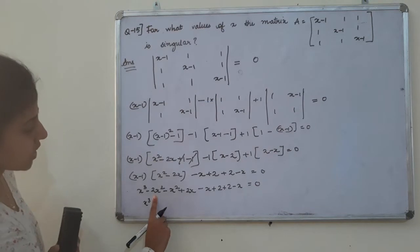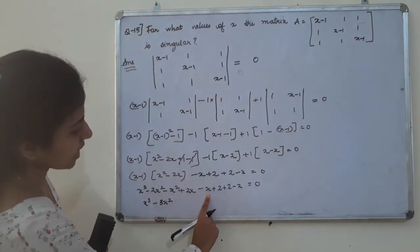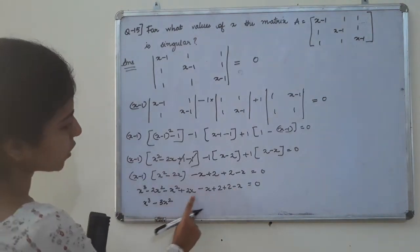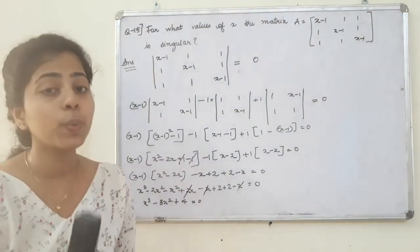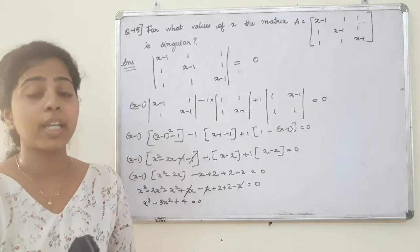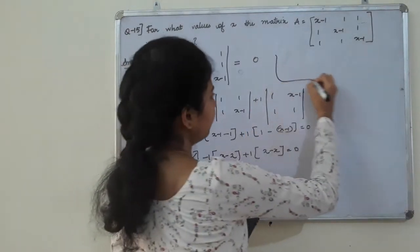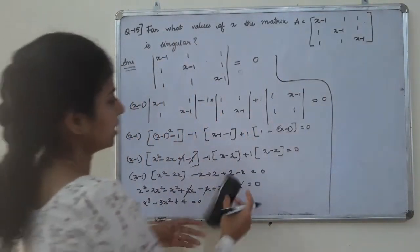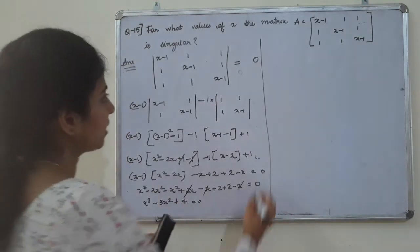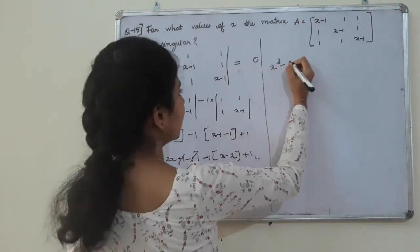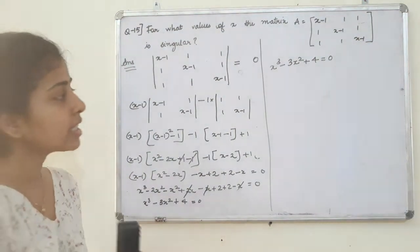Collecting like terms: minus 2x squared minus x squared gives minus 3x squared. Combining the x terms and constants, we arrive at the cubic equation x cubed minus 3x squared plus 4 equal to 0.